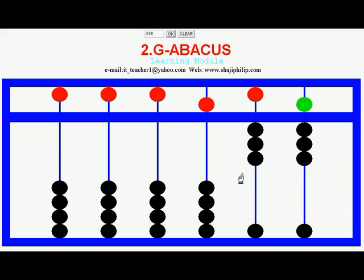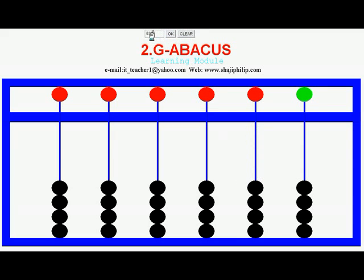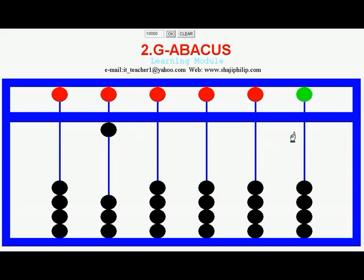To represent 1000: 1 will be set from the 1000's position. To represent 10,000: that is 1 followed by four zeros — 10,000. To represent 100,000: 1 in the 100,000's position and the rest of the places have 0 values — that is 100,000.